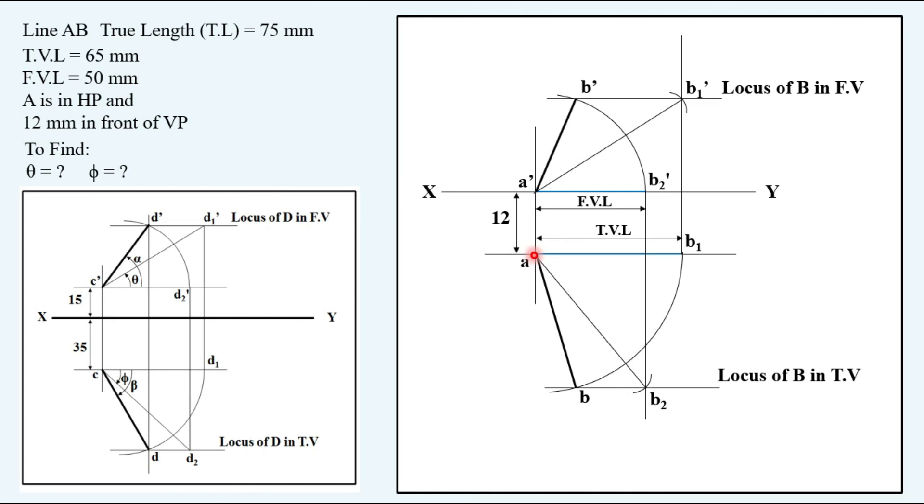In order to check whether you have drawn the correct solution, parallel to the projector of A draw a vertical line from B dash. If your solution is 100% correct you will be having B dash and B on a single vertical line.